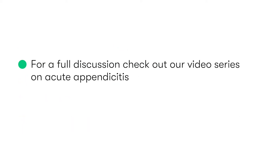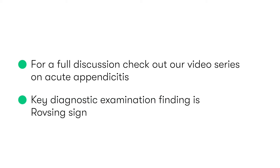For a full discussion on how appendicitis presents, make sure you check out our video series on acute appendicitis. But in this video, we're going to focus on one of the key diagnostic examination findings that we should look to elicit in someone who has acute appendicitis, and that's Rovsing's sign.